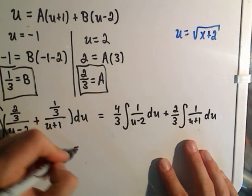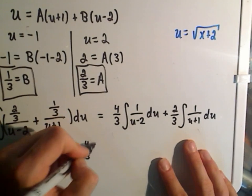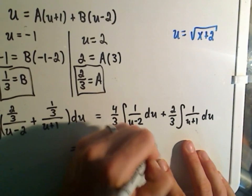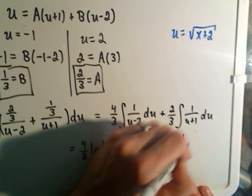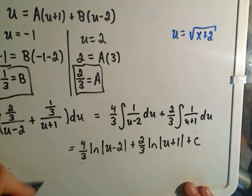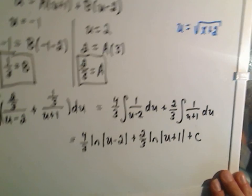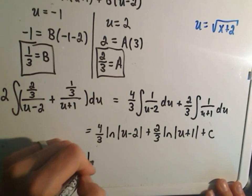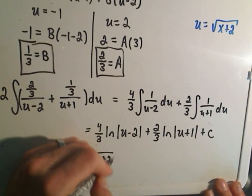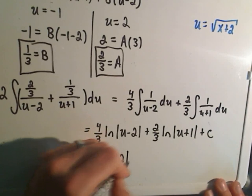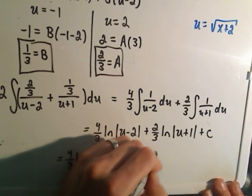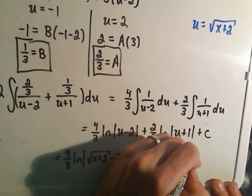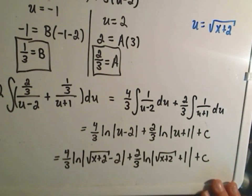And if I integrate both of those, I'll get 4 thirds, the natural logarithm of u minus 2, plus 2 thirds, the natural logarithm of u plus 1, plus c. Let's just plug our u back in, and we'll be finito at that point. So we'll get 4 thirds, the natural logarithm of the square root of x plus 2 minus 2, plus 2 thirds, the natural logarithm of the square root of x plus 2 plus 1, absolute value, all plus c.